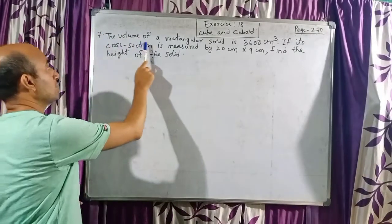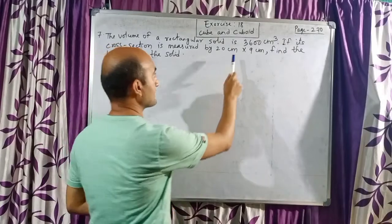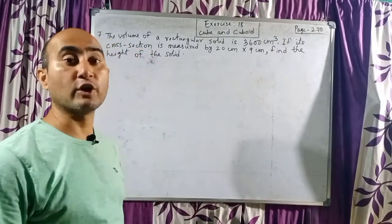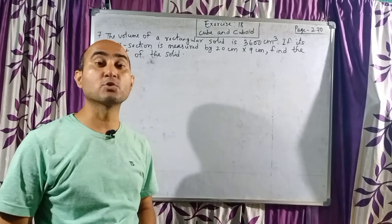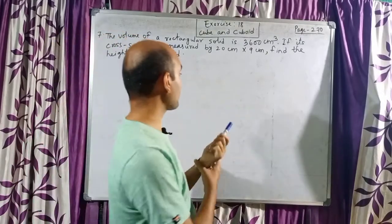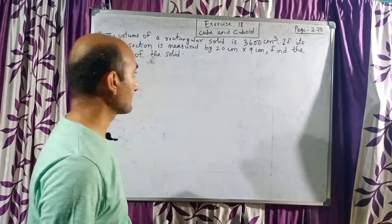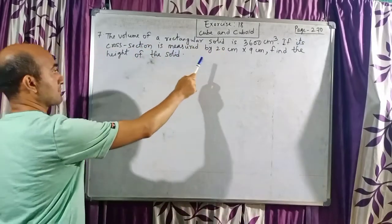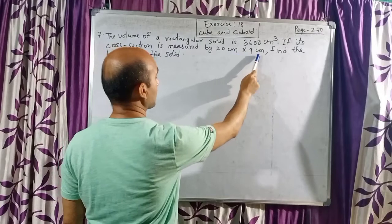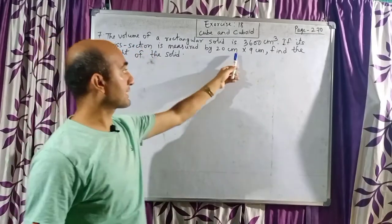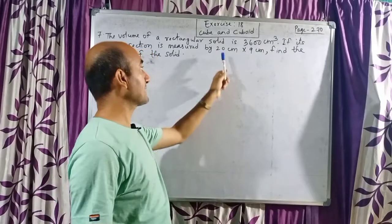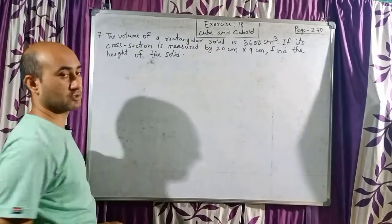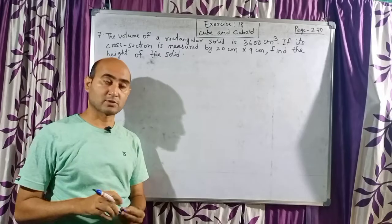The volume of a rectangular solid is 3600 centimeter cube. So children, volume of cuboid is given as 3600 centimeter cube. If its cross section is measured by 20 centimeter into 9 centimeter — so length is 20 centimeter, breadth is 9 centimeter — find the height of the solid.